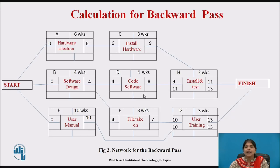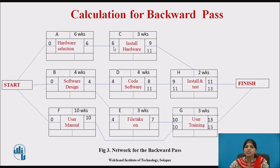C and D are the precedents of H, so 11 is written as the latest finish date for both C and D. For C, duration is 3 weeks, so the latest start date is 11 minus 3, giving 8.